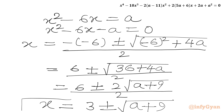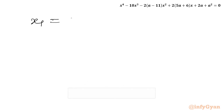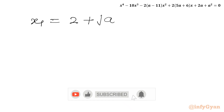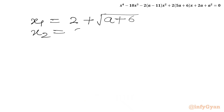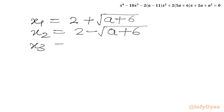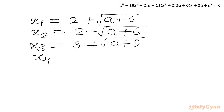So in total we have four solutions: x₁ = 2 + √(a+6), x₂ = 2 minus √(a+6), x₃ = 3 + √(a+9), and x₄ = 3 minus √(a+9).